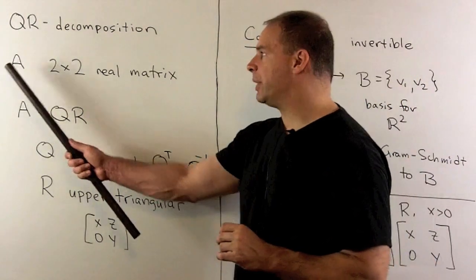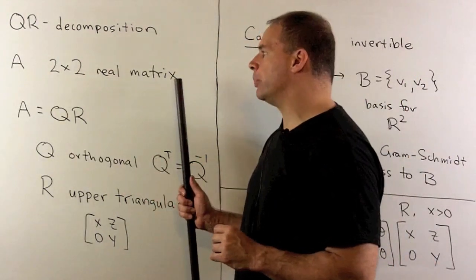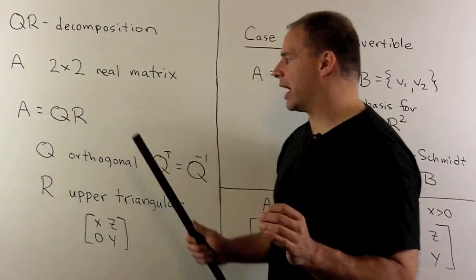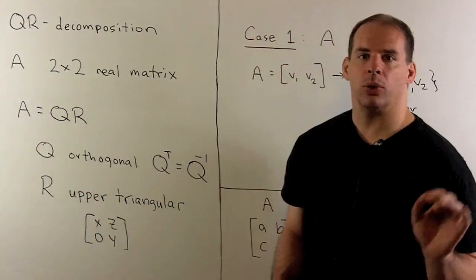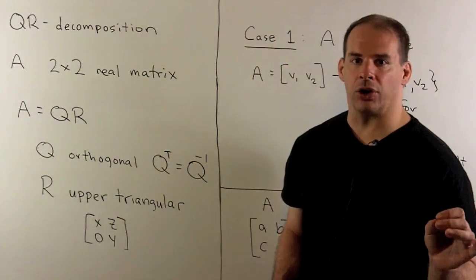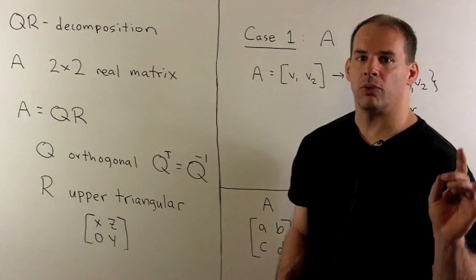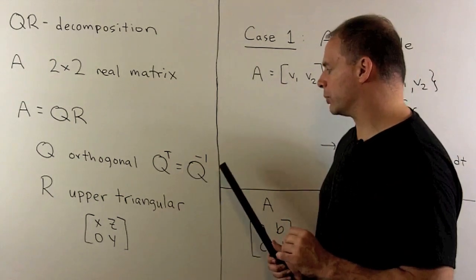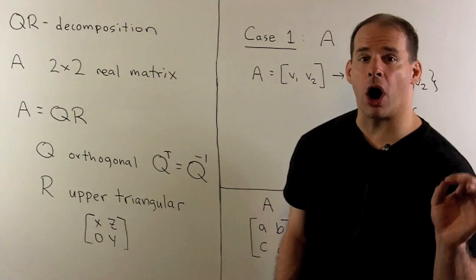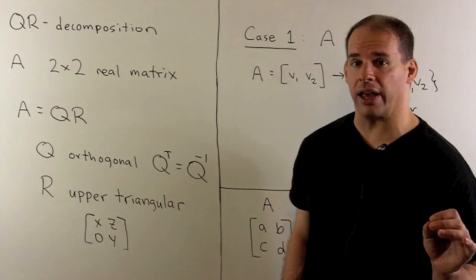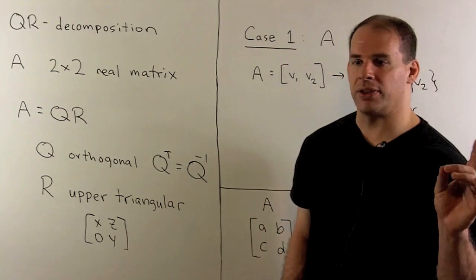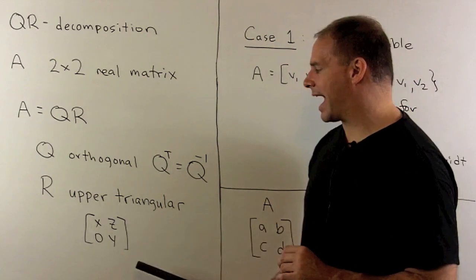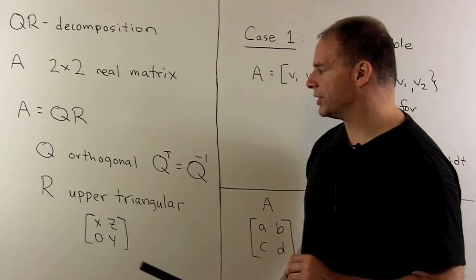Let A be a real 2x2 matrix. We'll factor A as Q times R, where Q is orthogonal — recall that means Q transpose equals Q inverse — and R is upper triangular, meaning the entries below the main diagonal are equal to 0.